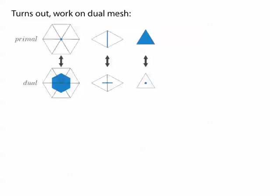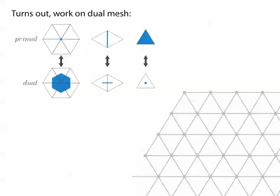every primal vertex is going to become a dual face, every primal edge becomes a dual edge, and every primal face becomes a dual vertex. If we start out with this gray triangle mesh here, its dual looks like this black mesh made of hexagons.